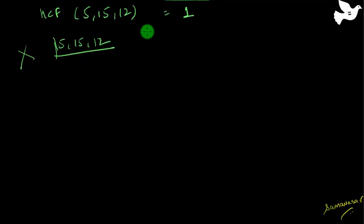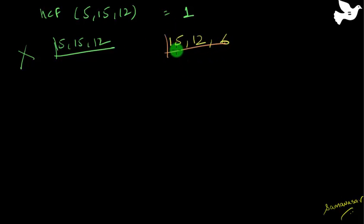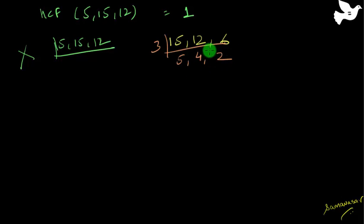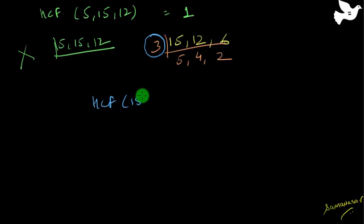Let me take another example: 15, 12, and 6. I know that 3 is a factor of all three: 15 ÷ 3 = 5, 12 ÷ 3 = 4, 6 ÷ 3 = 2. Now I can't find any number which divides all three remaining numbers, so I stop here. The HCF is simply 3. So HCF of 15, 12, and 6 = 3. This is the only difference when finding the HCF of three numbers.